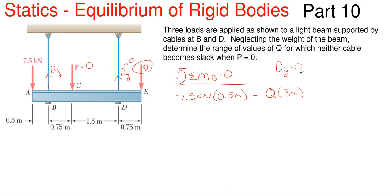And that is all I'm going to have because I'm setting DY to be 0 and determining what Q for which this happens. So pretty easy equation to solve for, Q is just going to be 7.5 times 0.5 all divided by 3, and that gives me a value of 1.25 kilonewtons, and Q would be going downwards.